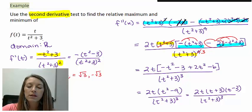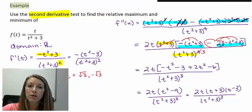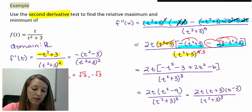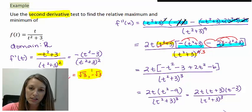Now you can probably see why the second derivative test isn't necessarily a shortcut compared to the sign chart. If the second derivative is easier to take, it's probably the better method. If the second derivative is more complicated to take, then it's probably better to use the sign chart. Now that I have the second derivative, I need to plug in the two critical values to see whether I get positives or negatives.